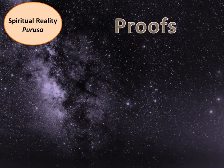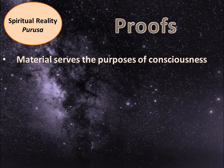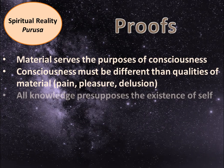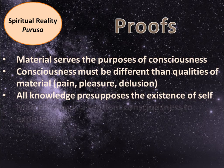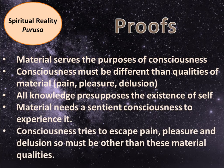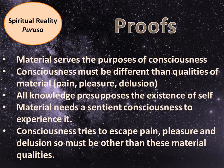The proofs given for spiritual reality are: material serves the purposes of consciousness. Consciousness must be different than qualities of the material — pain, pleasure, or delusion. All knowledge presupposes the existence of self. Material needs a sentient consciousness to experience it. Consciousness tries to escape pain, pleasure, and delusion, and so must be other than these material qualities.